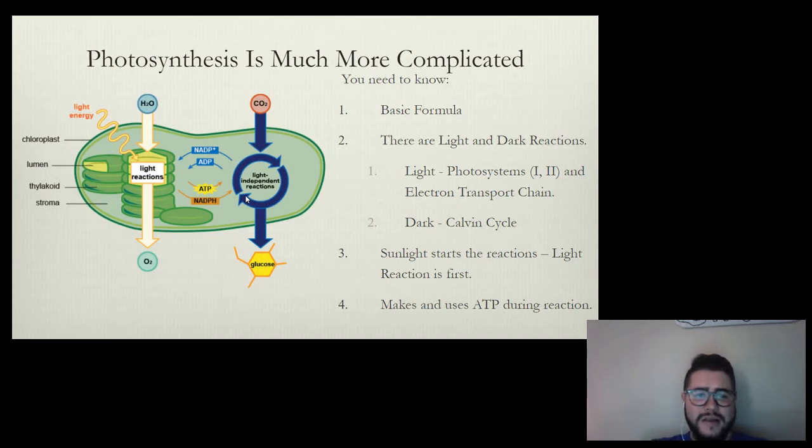This is the level of complexity you need to know. If you can understand what's happening in this picture, you can understand the basics of photosynthesis. What do you need for photosynthesis to occur? You need light energy, which we see here, water, which we see here, and carbon dioxide.